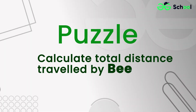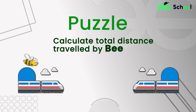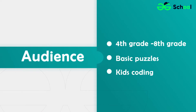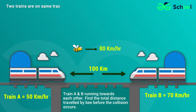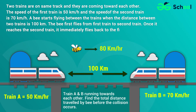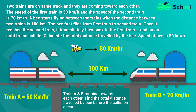Puzzle: Calculate total distance travelled by B. Two trains are on the same track and they are coming toward each other. The speed of the first train is 50 km per hour and the speed of the second train is 70 km per hour. B starts flying between the trains when the distance between the two trains is 100 km.